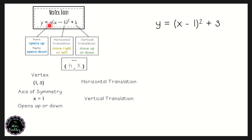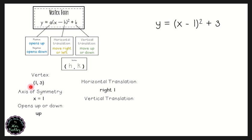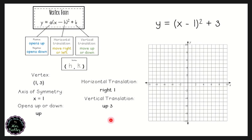Our a value is positive one, so the parabola opens up. If the vertex is at (1, 3), that means we move to the right one on the x axis and up three for the vertical translation. So when graphing this parabola, we start at the vertex at (1, 3).